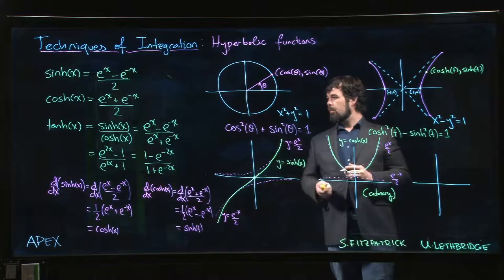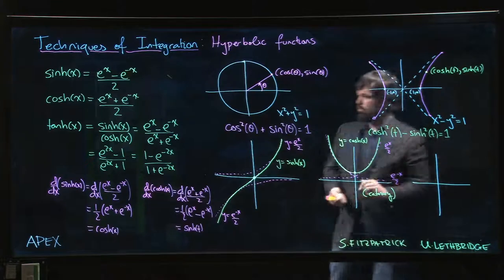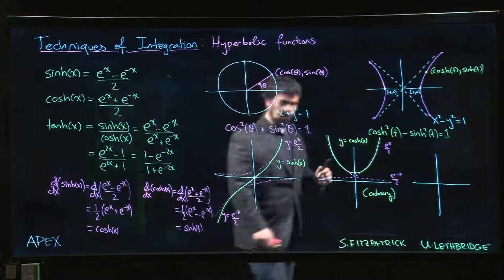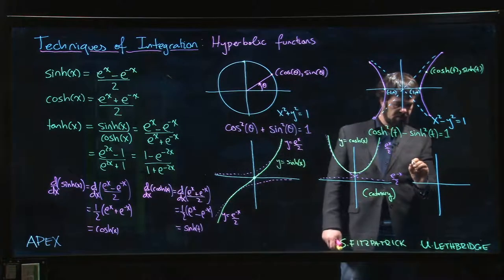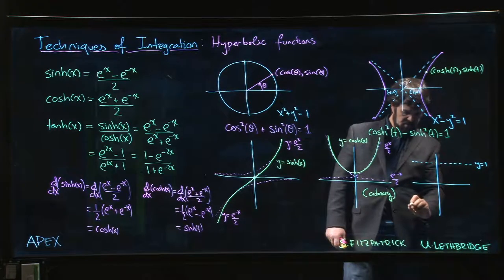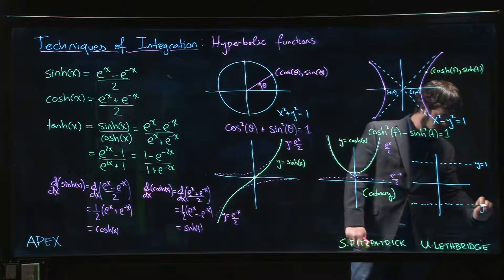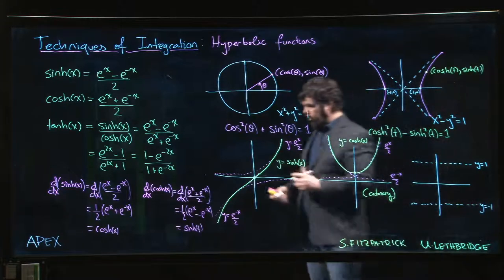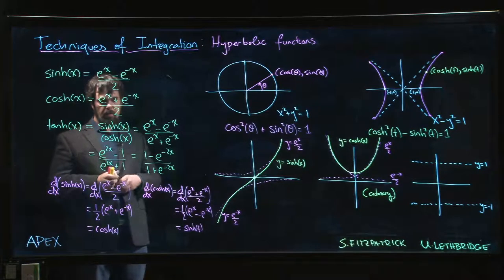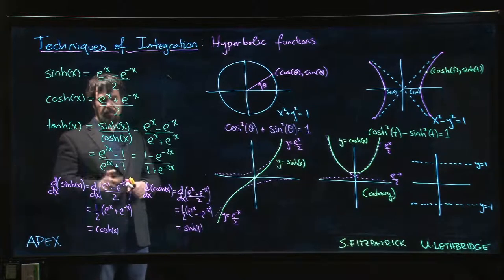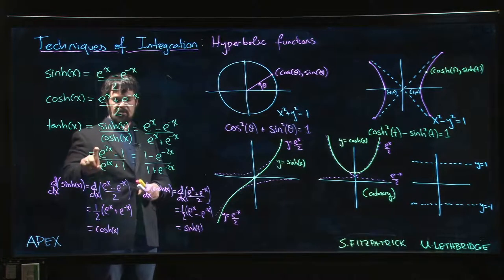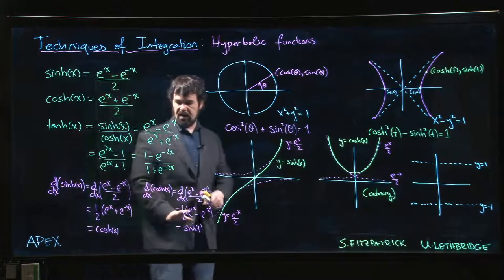The last one, hyperbolic tangent, that I'll try to draw - you can see pretty quickly that it has two horizontal asymptotes. Okay, if x is large and positive, y equals one will be an asymptote. If x is large and negative, y equals minus one will be an asymptote. You can see that here: for large positive values, these are negligible, you get one. For large negative values, that's negligible, you get minus one.